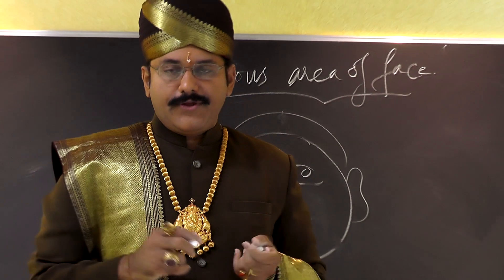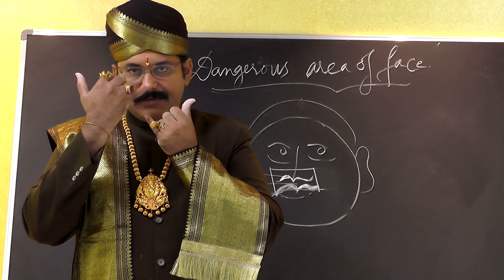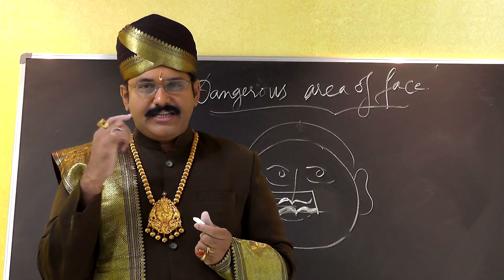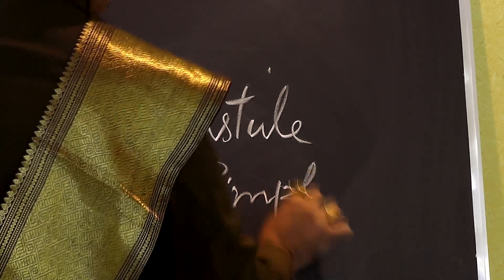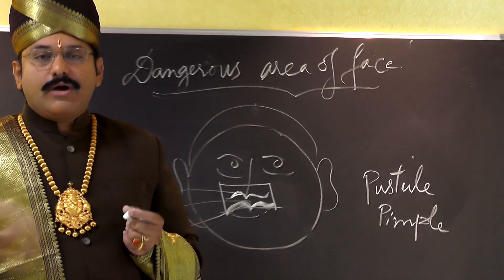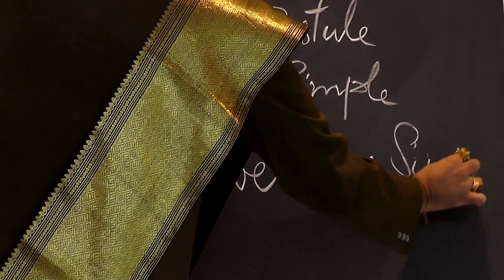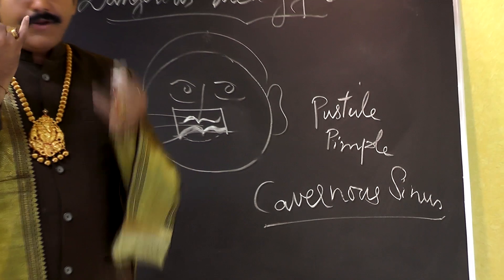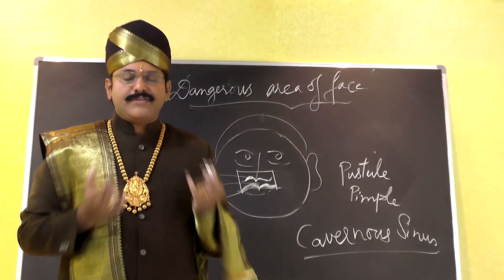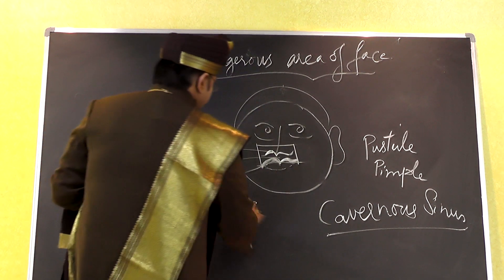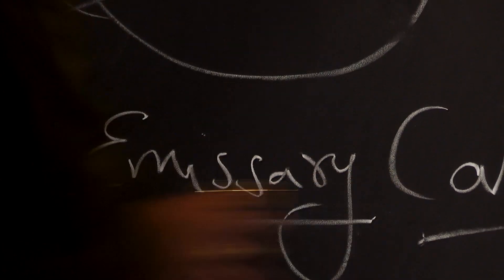You have the upper lip, the philtrum (the space between the ala of the nose and upper lip), and the medial portions of the cheeks. If there is any infection in this area — for example, a pustule or pimple that gets infected from pricking — the infection can spread from this portion of the face to the cavernous sinus via vessels present here. That is why this region is called the dangerous area of the face.